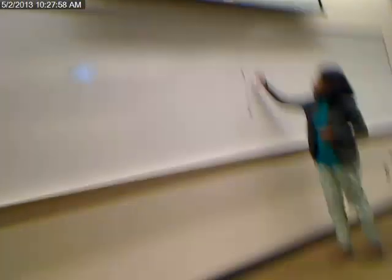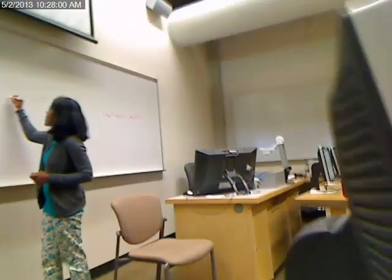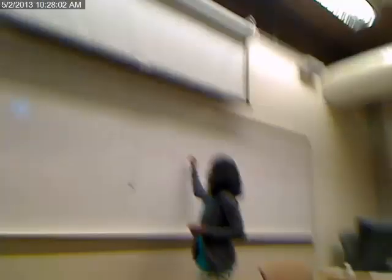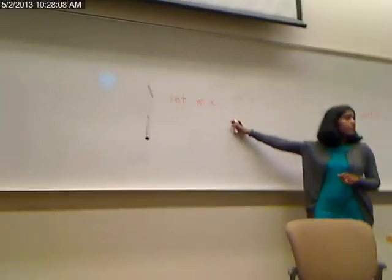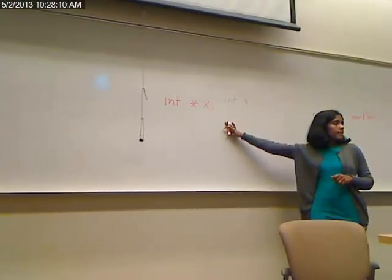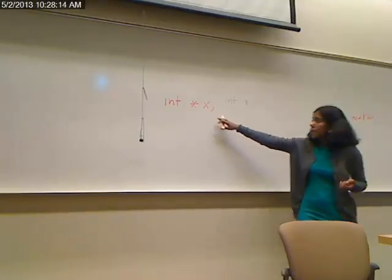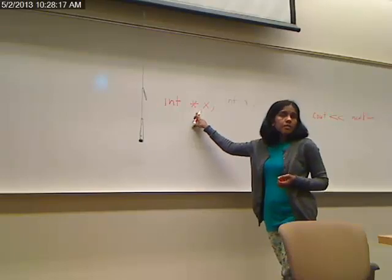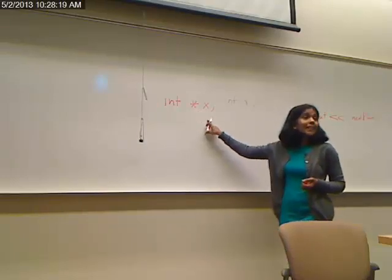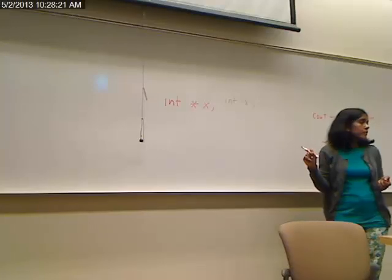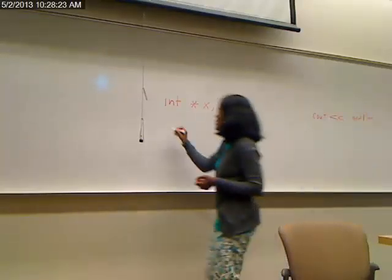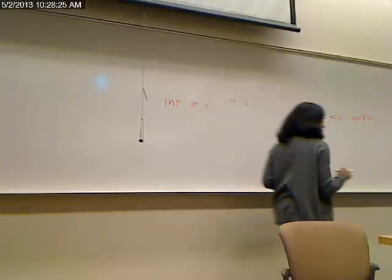So how do we create a pointer? So you say int star x and that creates a pointer. So what is a pointer here? x is a pointer. That's all it is. Because we have a star in front of it. And memory gets allocated for the pointer.